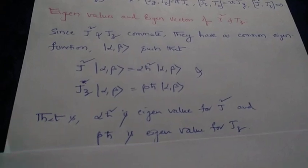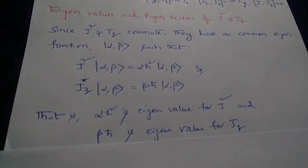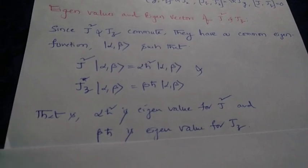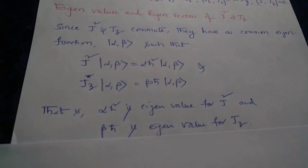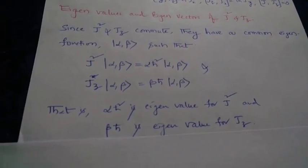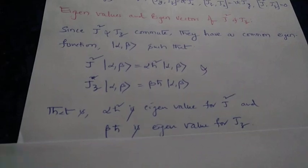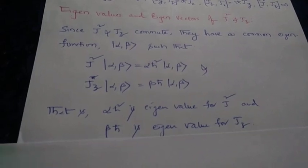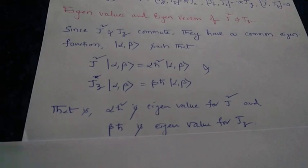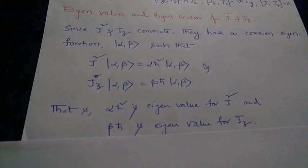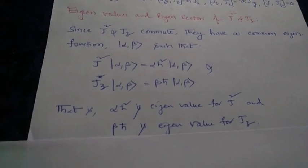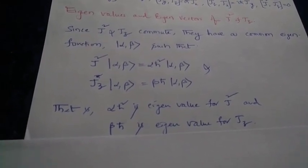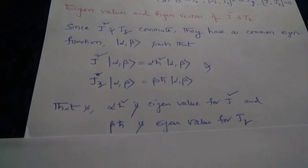Since J² and Jz commute, they share a common eigenfunction which can be taken as a ket |α, β⟩, such that J² operating on |α, β⟩ gives α*h-bar² times |α, β⟩, and Jz operating on |α, β⟩ gives β*h-bar times |α, β⟩. This means α*h-bar² is the eigenvalue for J² and β*h-bar is the eigenvalue for Jz.